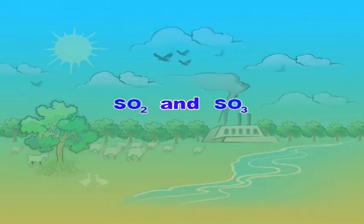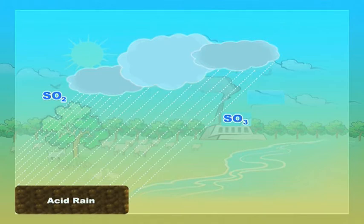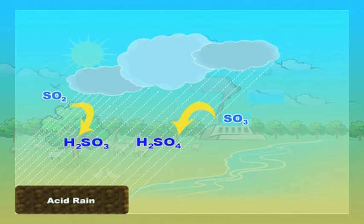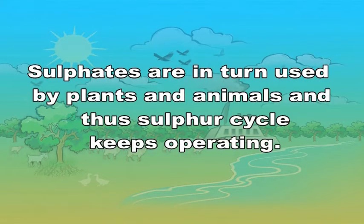Some amount of sulphur remains in deep sea. From the sea, it gets back to land via food chain, sea sprays and geological upheavals. SO2 and SO3 are released into the atmosphere by burning of fossil fuels. When there is rain, SO2 and SO3 dissolve in rainwater, forming sulphurous acid (H2SO3) and sulphuric acid (H2SO4) respectively. These fall on earth as acid rain. On reaching soil, sulphurous and sulphuric acid form sulphates with metals. Sulphates are in turn used by plants and animals, and thus the sulphur cycle keeps operating.